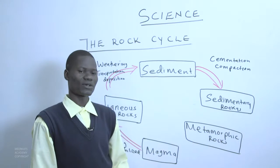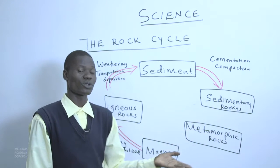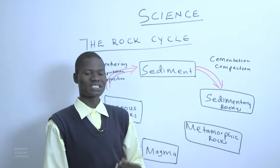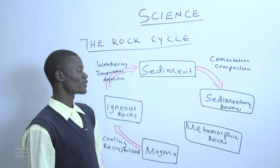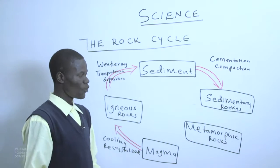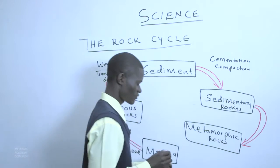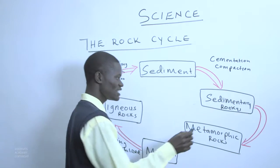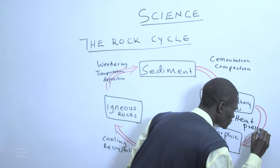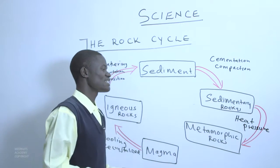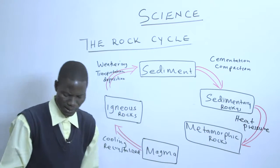What will happen to these sedimentary rocks over a period of time? Those sediments which are laid down in layers, we call them strata. Upon subjection to great heat and pressure, they will result in a new structure of rocks that are known as metamorphic rocks. The process they undergo is subjection to great heat and pressure — it is the heat and pressure that produces new types of rock called metamorphic rocks.